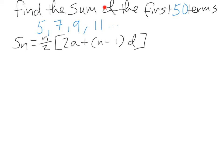So we want to find the sum of the first 50 terms of the sequence 5, 7, 9, 11, and we're going to use this formula to do it. The n represents the number of terms, in this case it'll be 50. The a represents the first term, in this case it'll be 5. And the d represents the common difference. So from 5 to 7, 7 to 9, 9 to 11, the difference is 2.